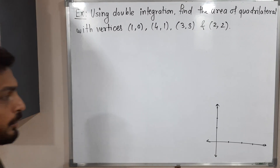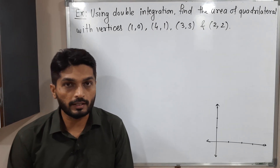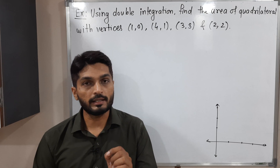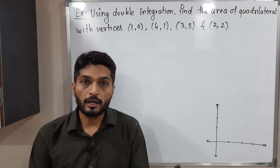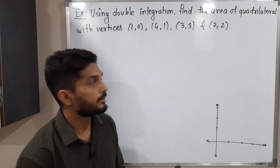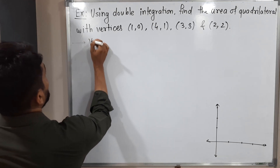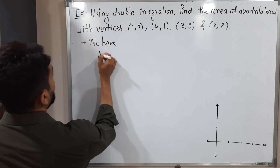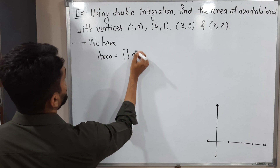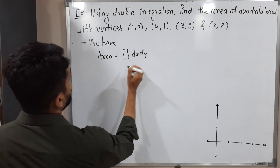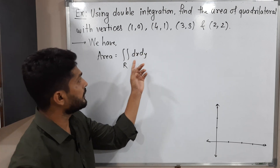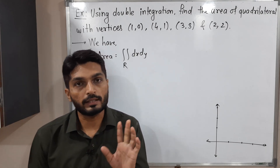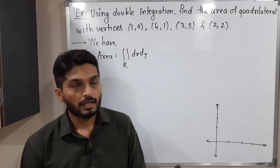In this video we are going to find the area of a quadrilateral whose vertices are four given points, using double integration. The formula for area is very simple: it is equal to the double integration of dx dy over region R. We simply have to find the limits, solve the double integration, and we will get the area.